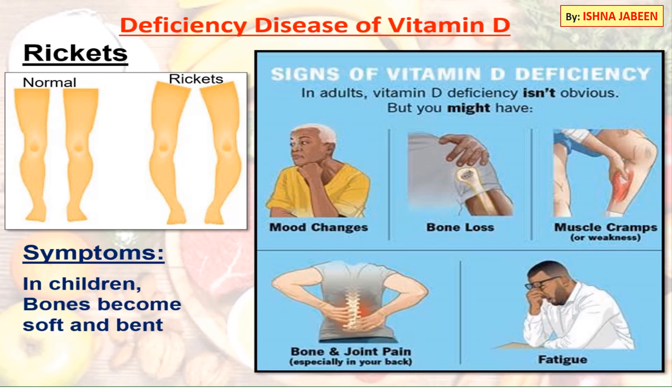Deficiency disease of vitamin D is rickets, which occurs in infants, young children, and teenagers. As you can see in the picture, a normal child has healthy bones, whereas a child suffering from rickets has bones that become soft, bent, and brittle.